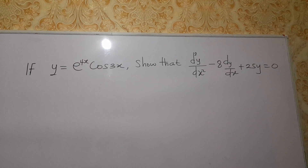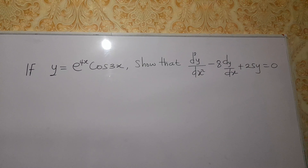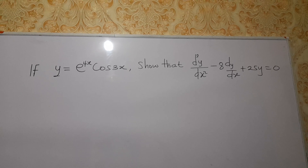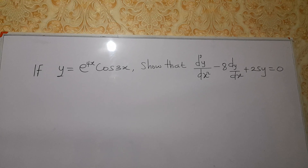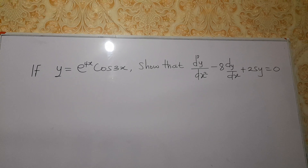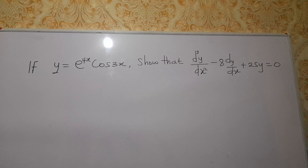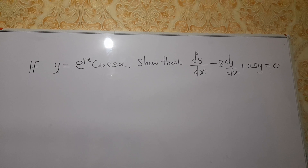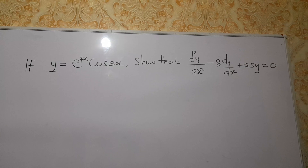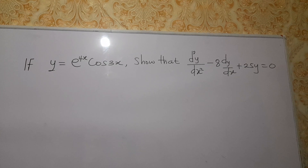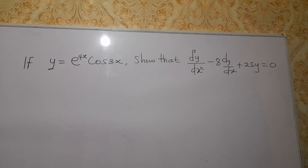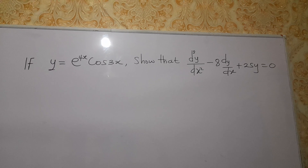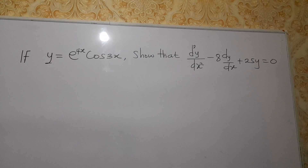Hello guys, welcome to my YouTube channel. Today we are going to find a solution to the calculus equation on the board, which is that if y is equal to e^(4x)cos(3x), show that d²y/dx² minus 8(dy/dx) plus 25y is equal to 0. So, how do we go about this?